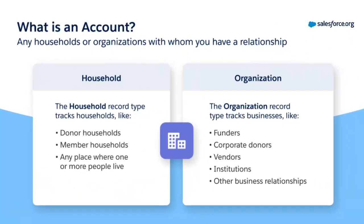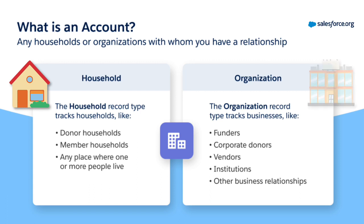In NPSP, there are two types of accounts: households and organizations. Household accounts track donors or members who live together. In NPSP, a household account is automatically created when you create a contact. Organization accounts are used for companies such as a corporate donor, vendor, and other business entities.